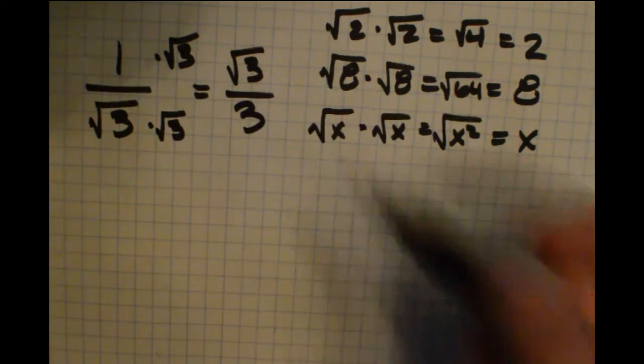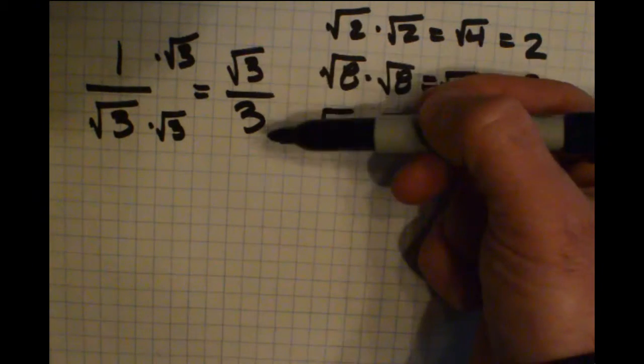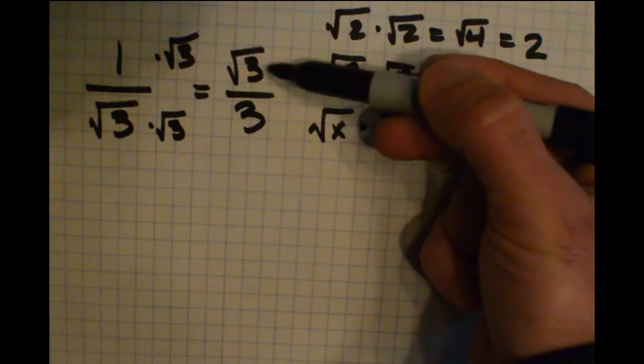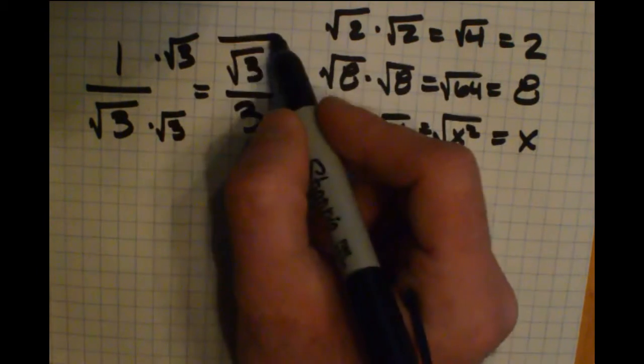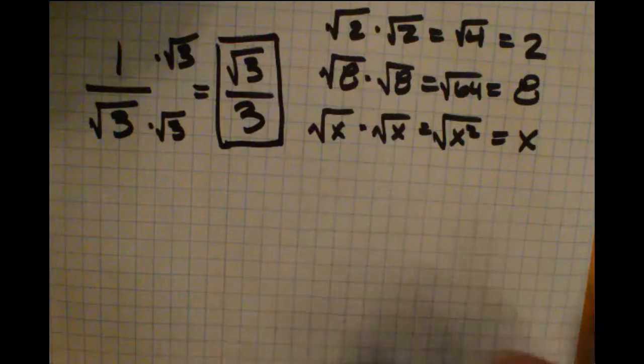Now you might be wondering if we can reduce this at all because we have 3 over 3, but this is inside a radical and this is not inside a radical, so this can't be reduced any further, and that would be considered simplified form.